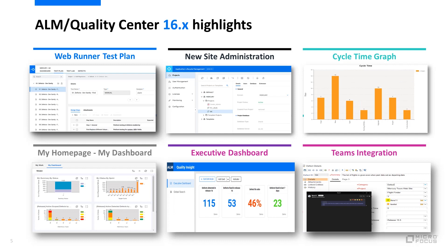In version 16, we've added the test plan module to Web Runner for managing the test plan tree and for creating and editing tests. We introduced a new web-based site administration, consolidating the administration capabilities of both site administration and SaaS add-on. The new cycle time graph shows how long defects remained in each status. This graph also enables you to drill down to the cycle time of each status in order to identify bottlenecks.